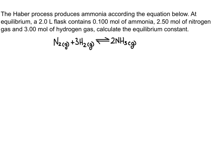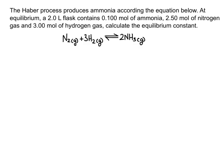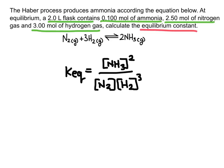Let's try solving a problem. The Haber process produces ammonia according to the equation below. At equilibrium, a 2-liter flask contains 0.1 moles of ammonia, 2.5 moles of nitrogen, and 3 moles of hydrogen gas. We need to calculate the equilibrium constant. I'll start by writing the equilibrium expression, which has the concentration of the products raised to the power of the coefficient divided by the concentration of the reactants, and then plug in the concentrations.